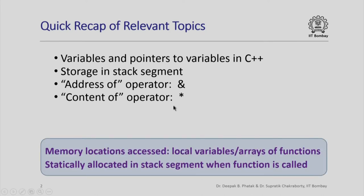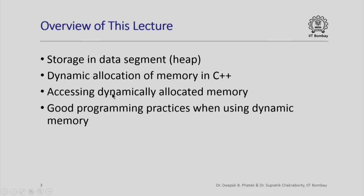In all that we have studied so far, the memory locations that we accessed — either directly by their name or through their addresses — were basically for local variables or arrays of functions, and they were statically allocated in the stack segment when the function was called. In this lecture, we are going to see storage in another part of the memory allocated to a process by the operating system. Specifically, we are going to look at storage in the data segment, which is also called the heap.